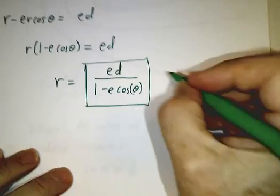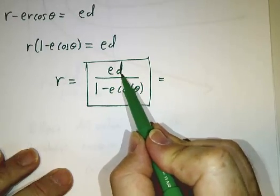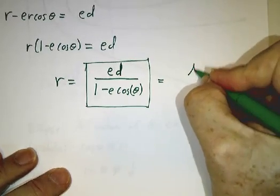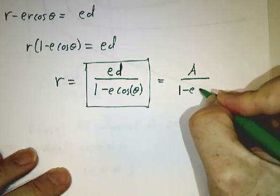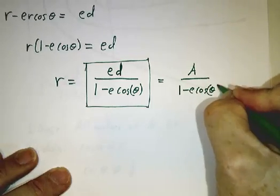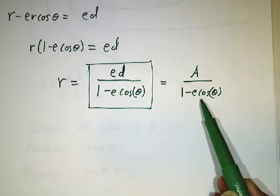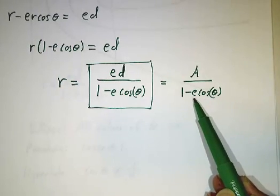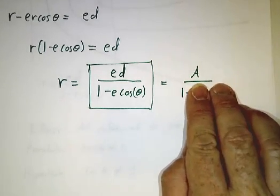Now, sometimes it's convenient to give e times d is just a constant and d is a constant, so we usually give it another name and write it as a over 1 minus e cosine theta. And in fact, this describes circles as well as other conic sections. If e is 0, then we just have r equals a, that's a circle.